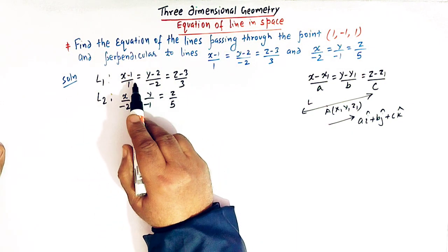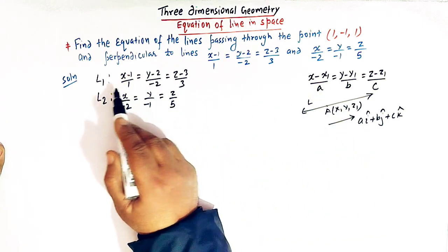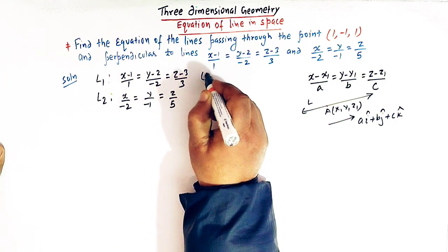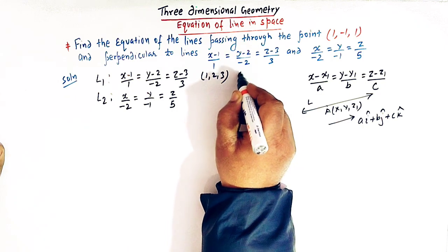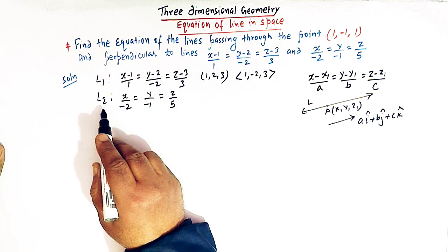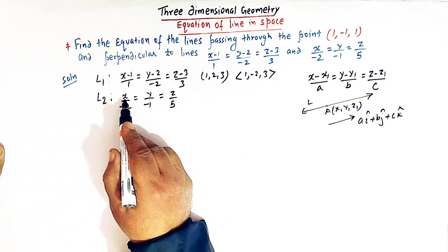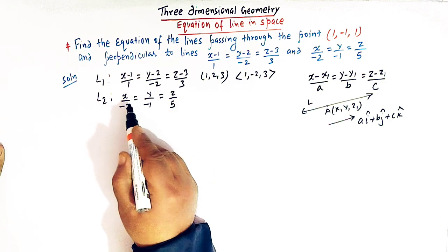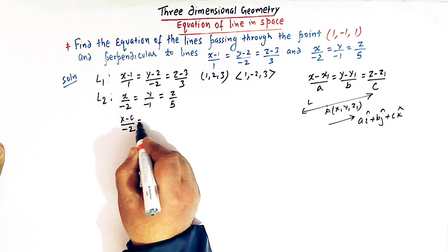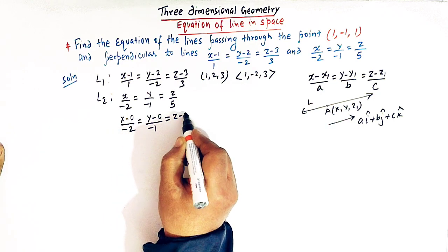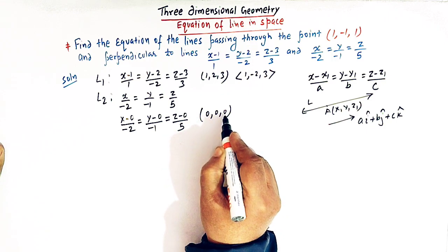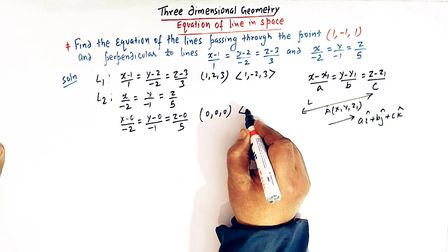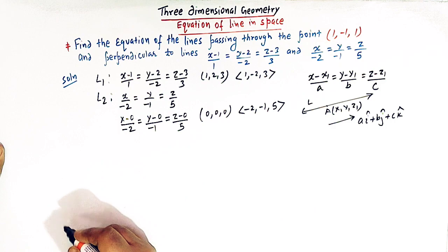Comparing, we can see that line L1 passes through 1, 2, 3 and has direction ratios 1, minus 2, and 3. Line L2 passes through the origin — we can write it as x minus 0 over minus 2, y minus 0 over minus 1, z minus 0 over 5 — so its coordinates are 0, 0, 0 and its direction ratios are minus 2, minus 1, and 5.